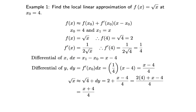Hence, the local linear approximation of f is approximately equal to √4 + dy = (x − 4)/4 + 2, which simplifies to (x + 4)/4.